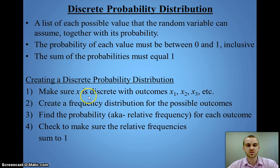All of those probabilities have to add up to 1. To create our probability distribution, we're first going to make a list of all our outcomes, then find the frequency for each, find the probability or relative frequency, and check to make sure all those relative frequencies add to 1.